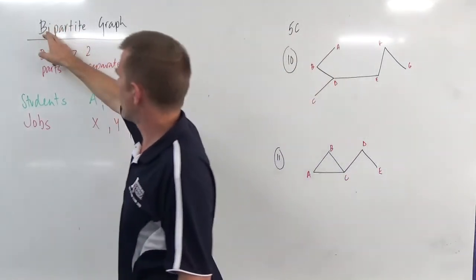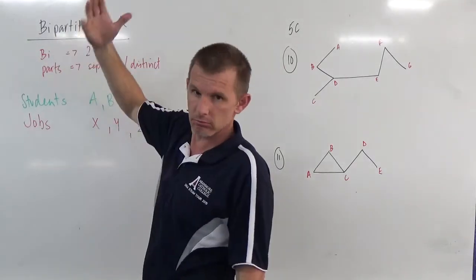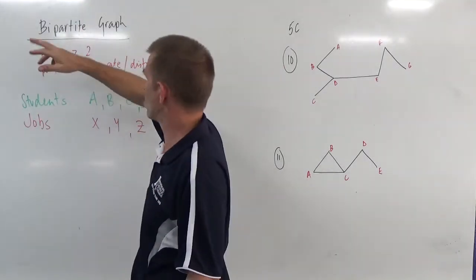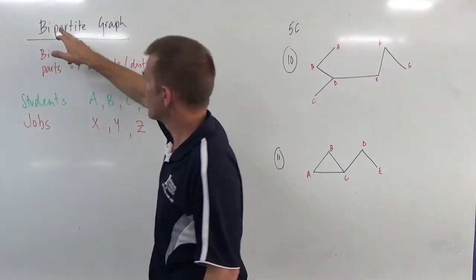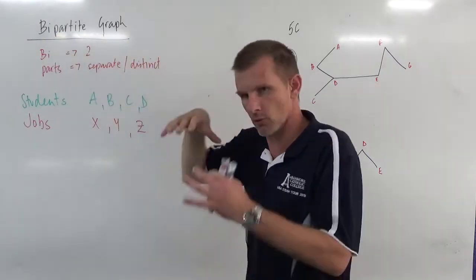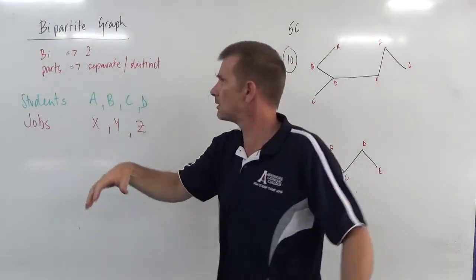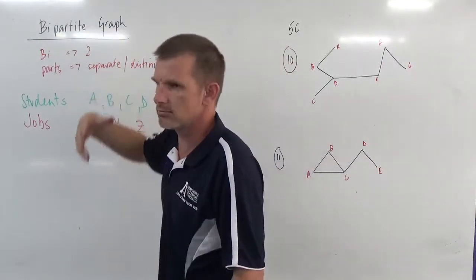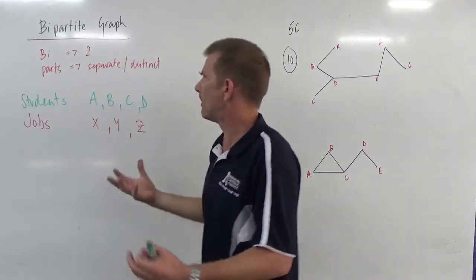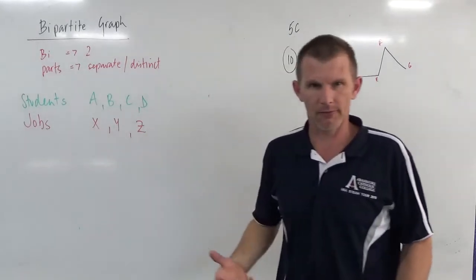Bi- meaning two — bicycle, you can think of a hundred other words like that. Part- meaning separate or distinct. I don't know what the -ite bit means. Bipartite graphs.